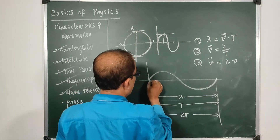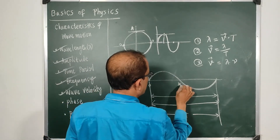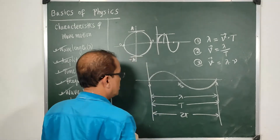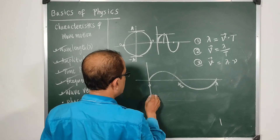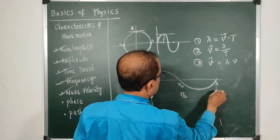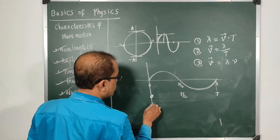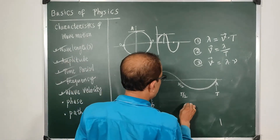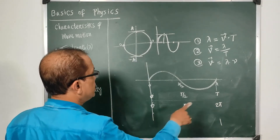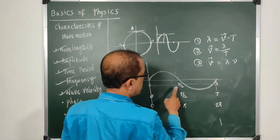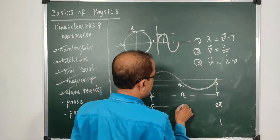The node and antinode points correspond to specific path and phase values. Path-wise: 0, λ/2, and λ. Time-wise: 0, T/2, and T. Phase-wise: 0, π, and 2π. So there are three different measurements — based on wavelength (path), time period, and phase — all describing the same wave cycle.